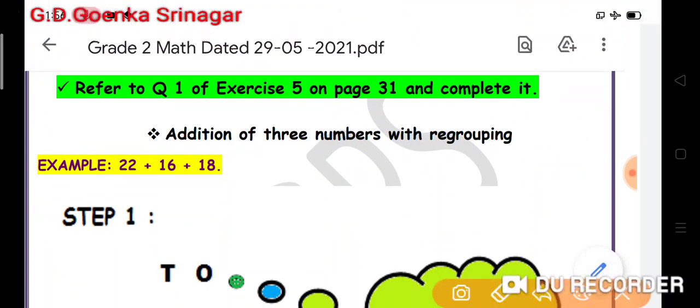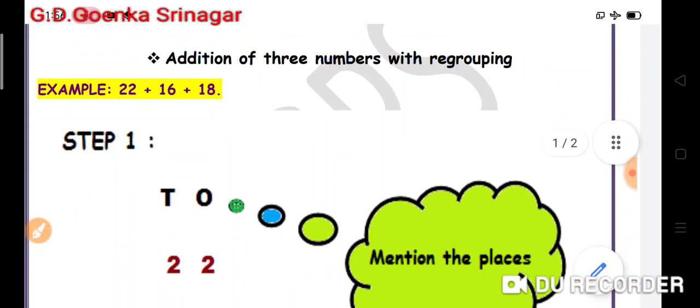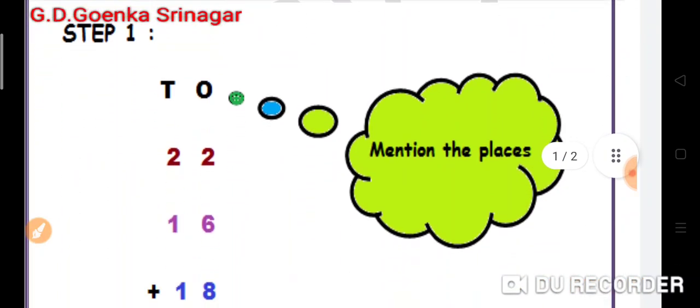Now let us have a look at the example where we have to add three numbers with regrouping. The first number here is 22, the second number is 16, and the third number is 18. Let us follow the steps.